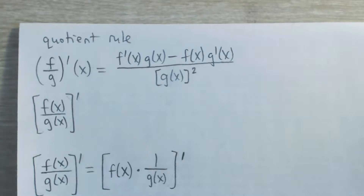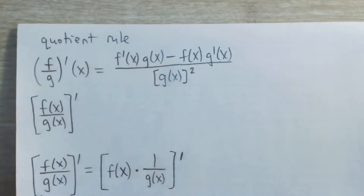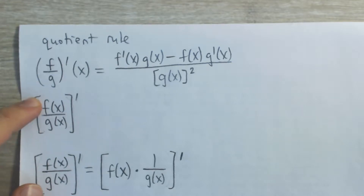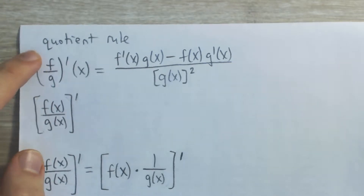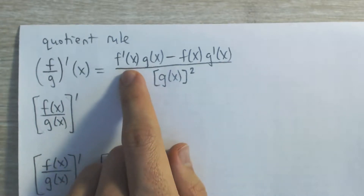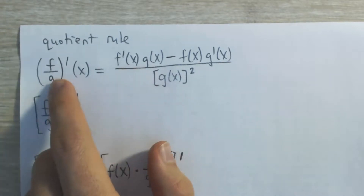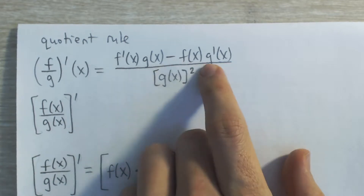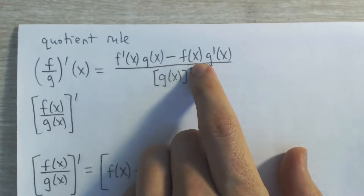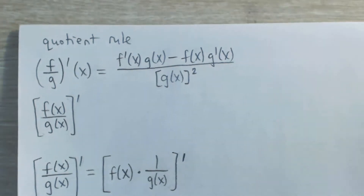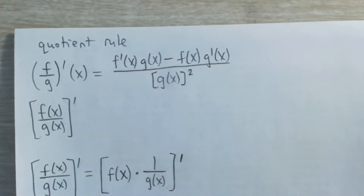Here I want you to prove the quotient rule for derivatives, which says that the derivative of a quotient of two functions — f of x over g of x, or (f over g) prime of x — is equal to the derivative of the top function f of x times the bottom function g, minus just the regular top function f times the derivative of the bottom function g, all over the bottom function g squared.